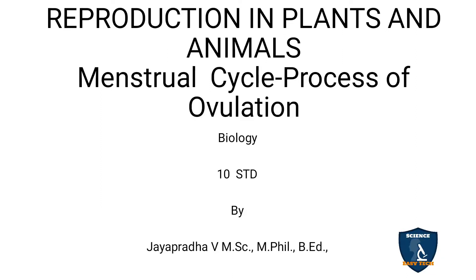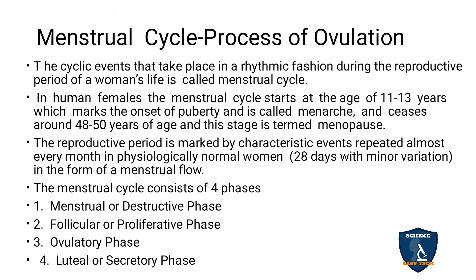In this video, we will look at the menstrual cycle and the process of evolution in reproduction in plants and animals. The cyclic events that take place in a rhythmic fashion during the reproductive period of a woman's life is called the menstrual cycle.